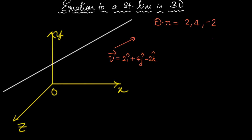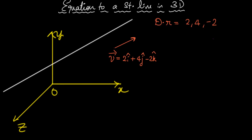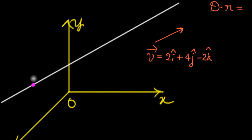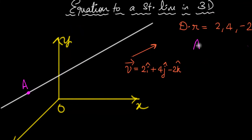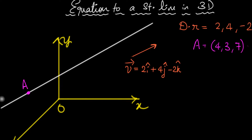So I'm going to give you one more piece of information — we require two pieces of information. I'm going to say the line has to pass through a specific point. Let me call that point A, with coordinates 4, 3, 7 — some random numbers. Now that I've given you these two pieces of information, the line is completely fixed.